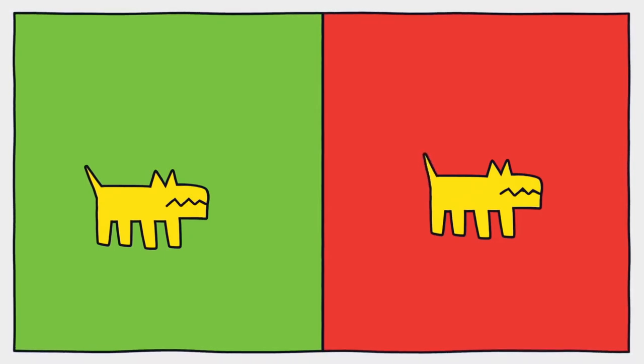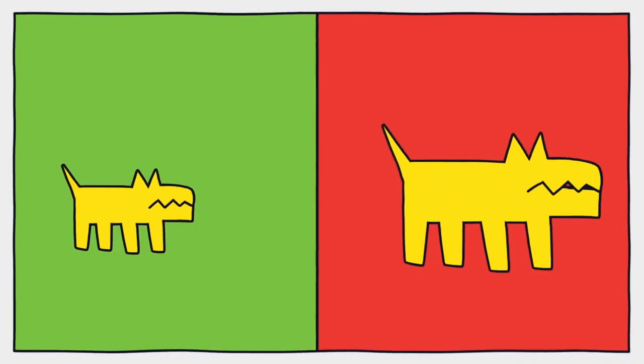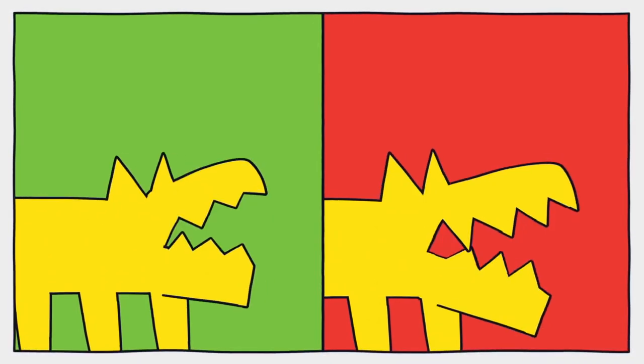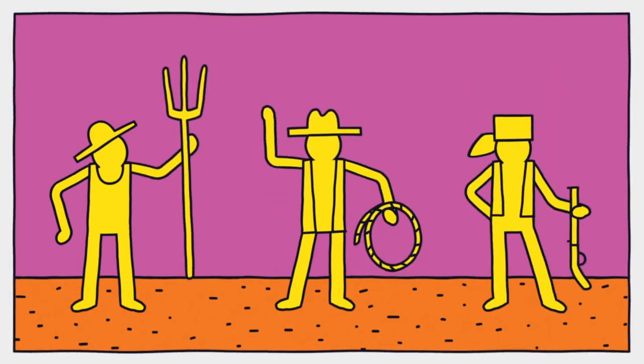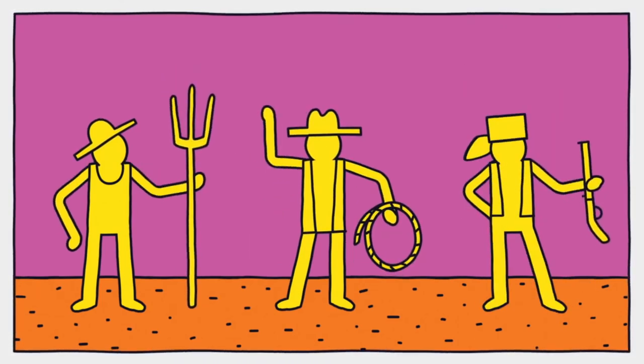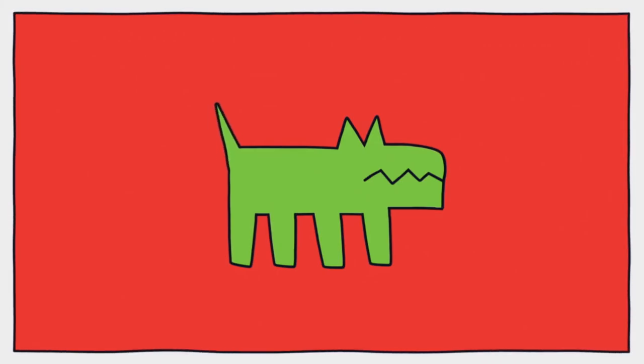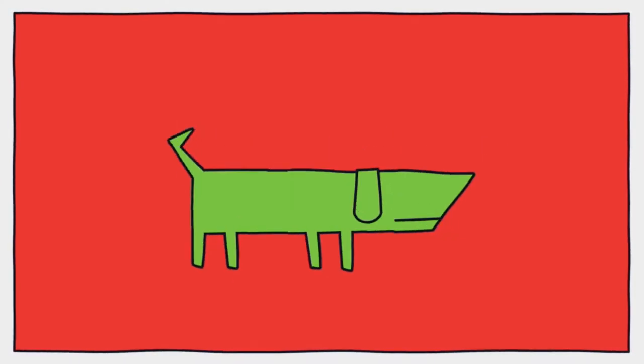They would not have looked all that different from their wild cousins. They were primarily distinguished by their smaller size and a shorter snout full of comparatively smaller teeth. But, as human cultures and occupations became more diverse and specialized, so did our friends.